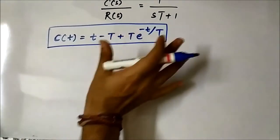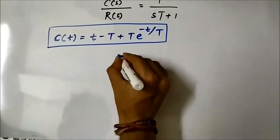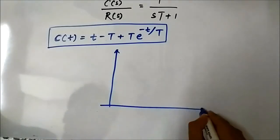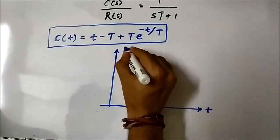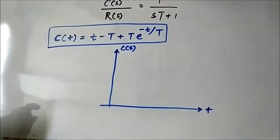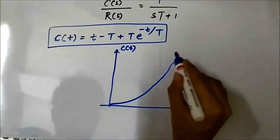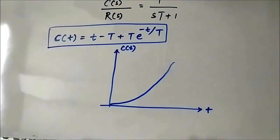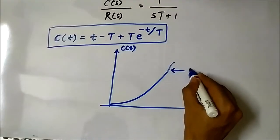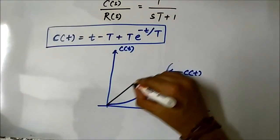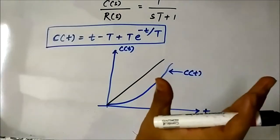As far as the shape of the response waveform is concerned, let us draw it. The axes are t and c(t). The waveform looks like a ramp that starts with a delay. We can also draw the ramp input signal r(t) = t alongside the output to compare them.